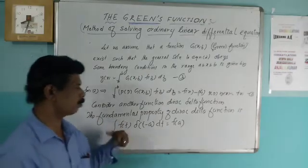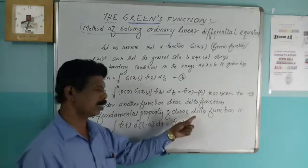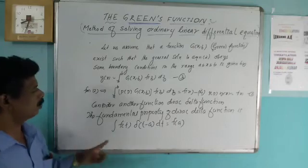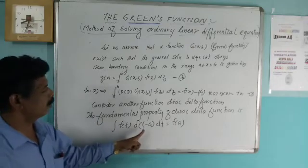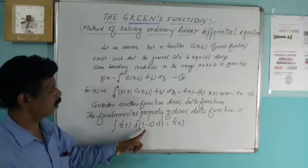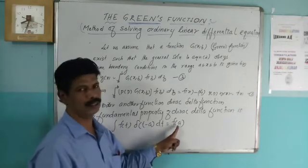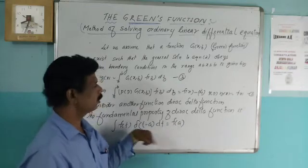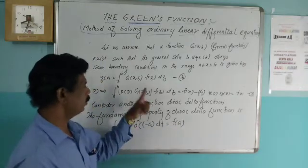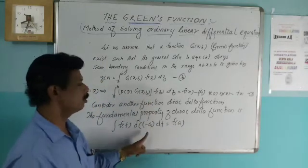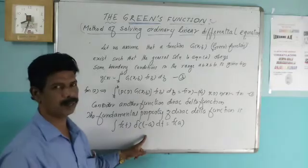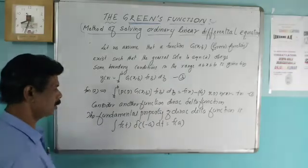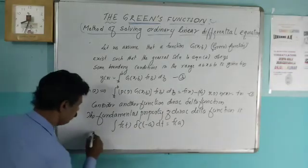The fundamental property of the Dirac delta function is: integral f(t)·δ(t−a) dt = f(a). Now, comparing equation 4 with the fundamental property of the Dirac delta function.